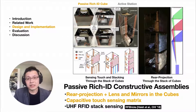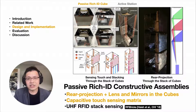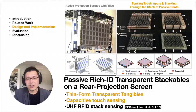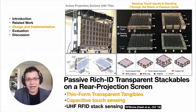We implemented the two systems based on the same philosophy — the touchscreen integration intentionally keeps the rich ID tangibles passive. In RFI Pillars, we leverage the lens and mirrors in the cube to pass the rear projection up, and use a capacitive touch-sensing matrix to pass the touch event down to the active stations for signal processing. In RFI Tiles, we create thin-form transparent cards and tiles covered by a capacitive touch-sensing matrix, and detect touch input using the active tiles on the projection surface. Both systems use a stacking sensing mechanism similar to RFI Bricks, but their UHF tag antenna designs differ due to their form factors.